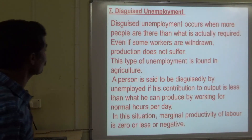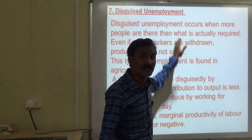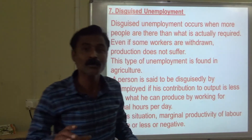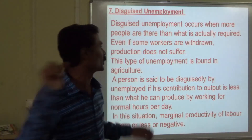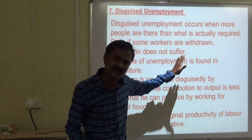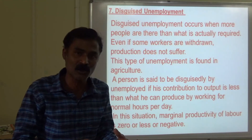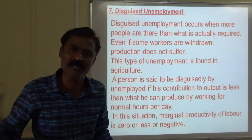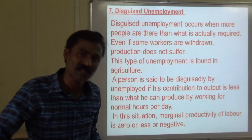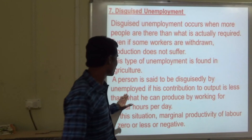Next is disguised unemployment. This occurs when more people are employed than what is actually required — more laborers, less work. Even if some workers are withdrawn, production does not suffer. For example, if 10 people are doing a job that 5 people can do, the remaining 5 are not contributing — yet production carries on. A person is said to be disguisedly unemployed if their contribution to output is zero.